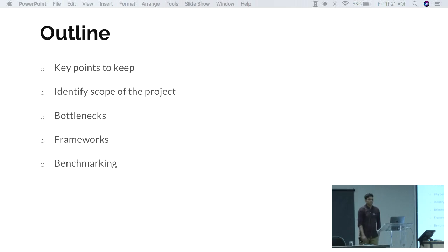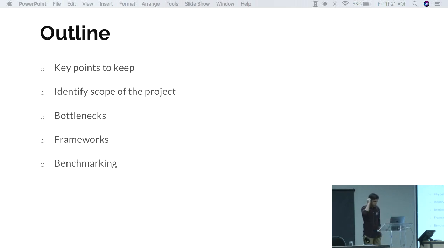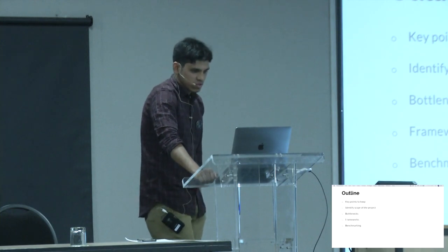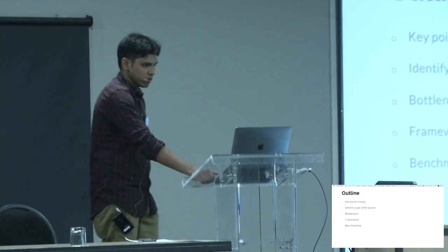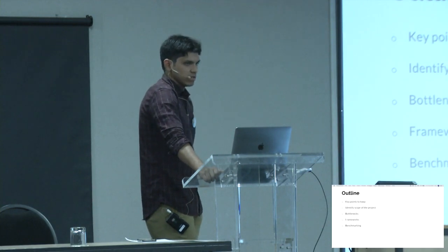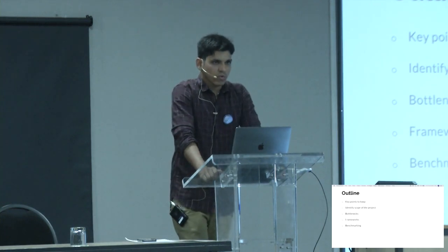The outline of this presentation is as follows. First, I explain the key points common to all deep learning frameworks that help us judge them. Second, identify your project type so you can decide your framework. Third, the bottlenecks every deep learning framework has. Fourth, I'll discuss the top three frameworks in the industry. And last, benchmarking — though it is totally dependent on your project rather than benchmarking alone.